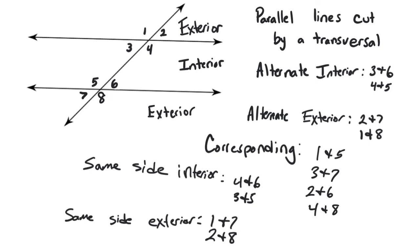You will need to know what all those mean. Remember: alternate means opposite sides of the transversal — one on the left and one on the right. Interior means on the inside of the parallels, exterior means on the outside. Same side means they're on the same side of the transversal. And corresponding angles are going to be in the corresponding positions from one intersection to the next.